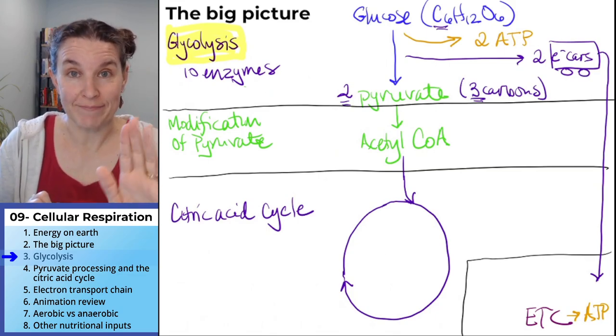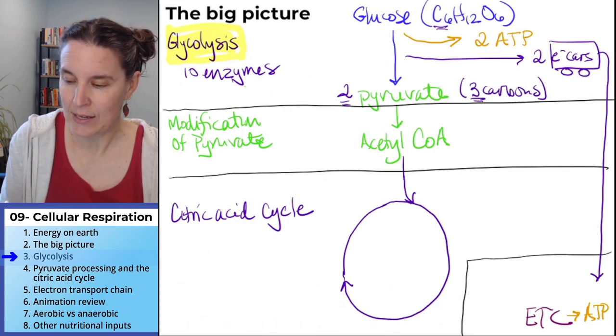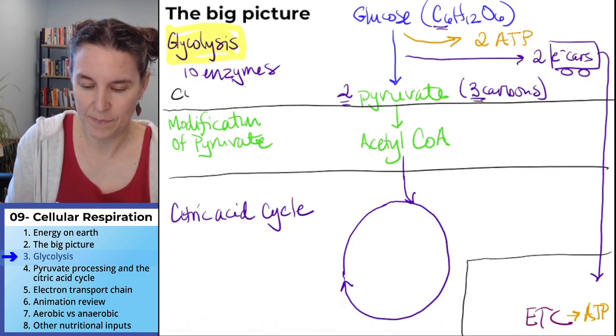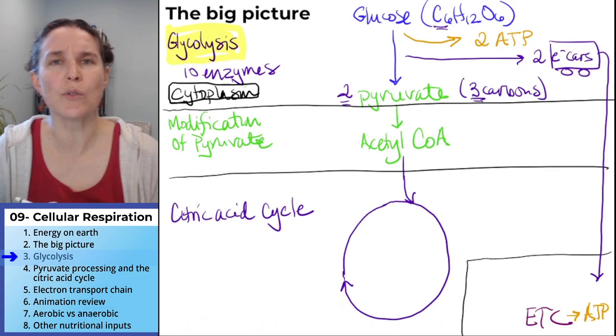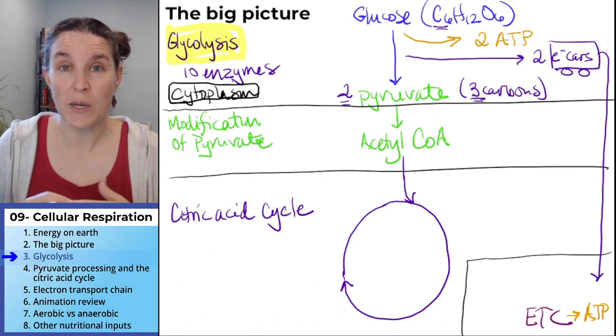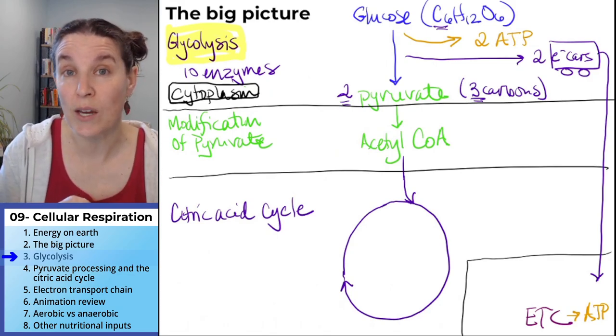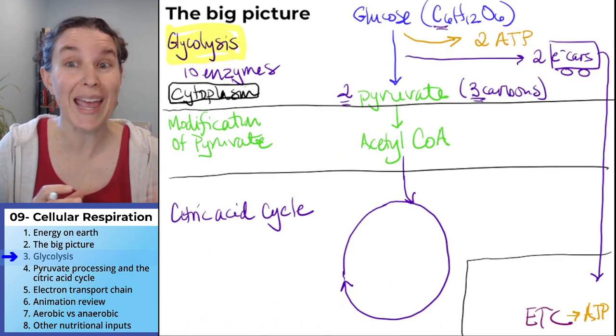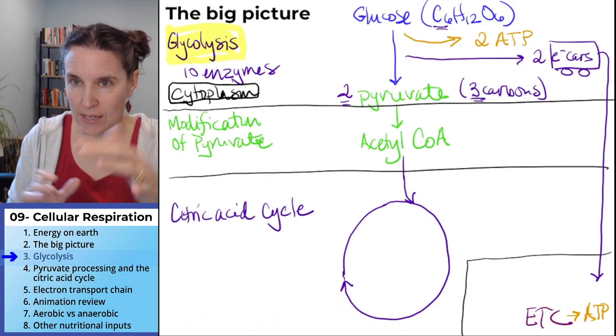This whole thing, glycolysis, takes place in the cytoplasm. And it's probably a good idea for me to make note that the process of cellular respiration that I am describing is what happens in a eukaryotic cell.